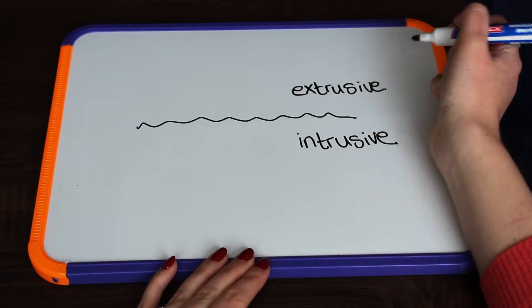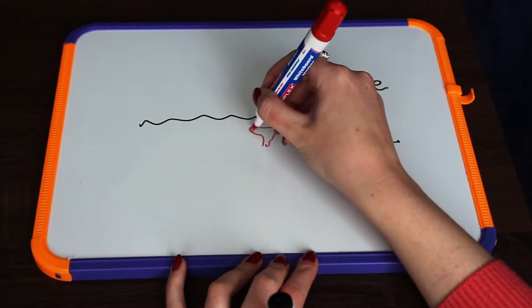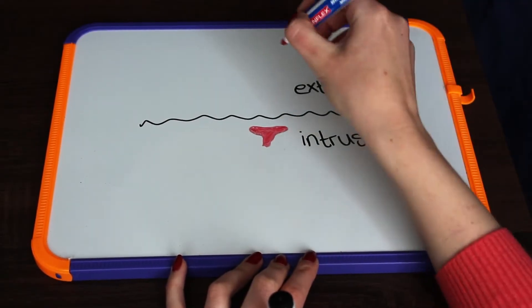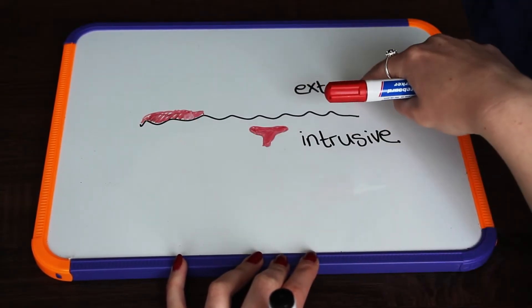The key thing with intrusive versus extrusive igneous rocks is where they formed. If this rock formed within the earth's crust, then it will be an intrusive igneous rock. If this rock formed on top of the earth's crust, then it is an extrusive igneous rock.